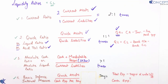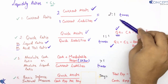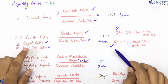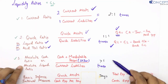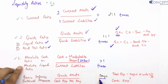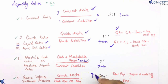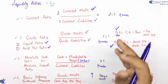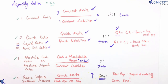The fourth ratio is basic defense interval measure. Current ratio, quick ratio, and absolute cash ratio ke answers times mein aate hain, lekin is ratio ka answer days mein aata hai — aur jitne zyada days, utna good; jitne kam days, utna bad. Formula: quick assets divided by cash expenses per day.